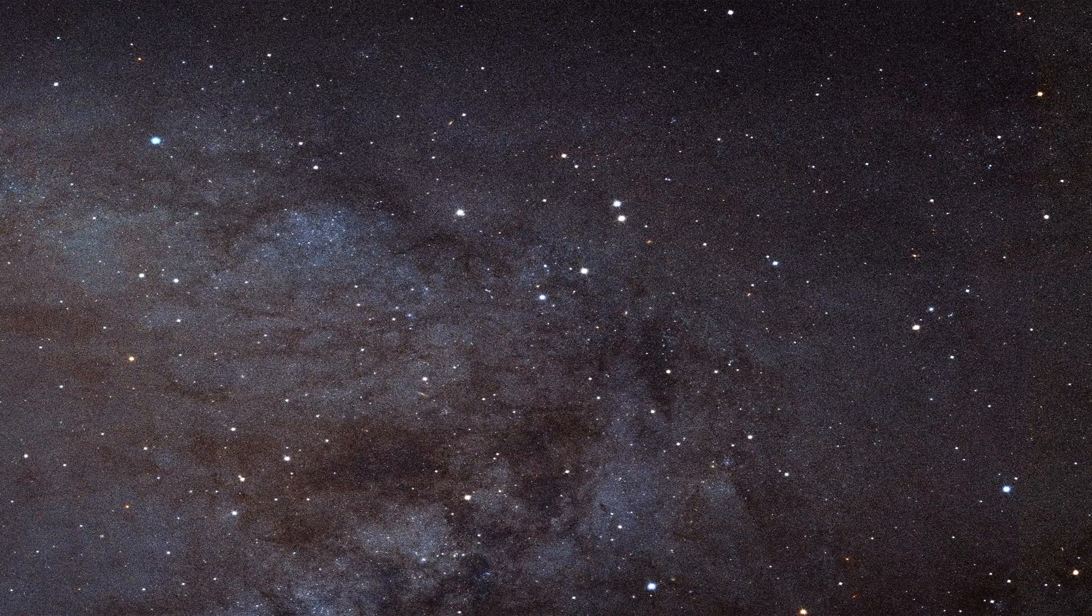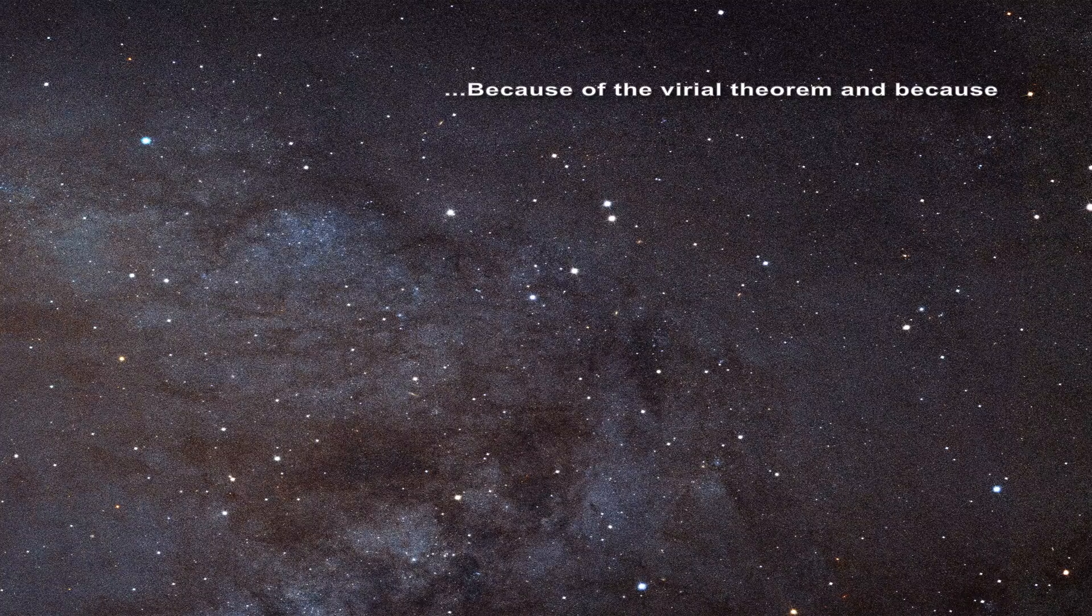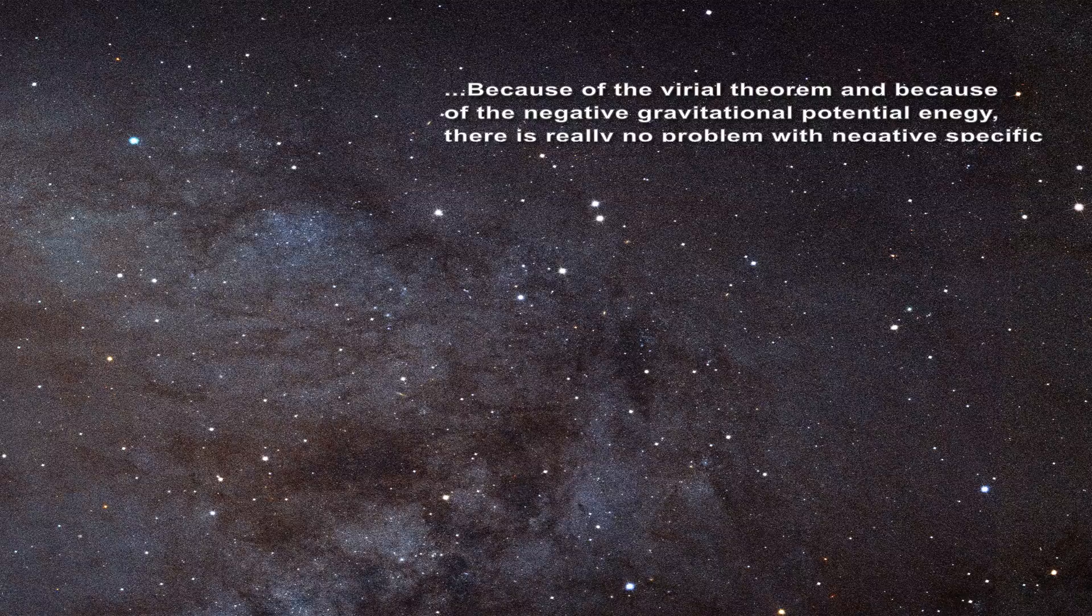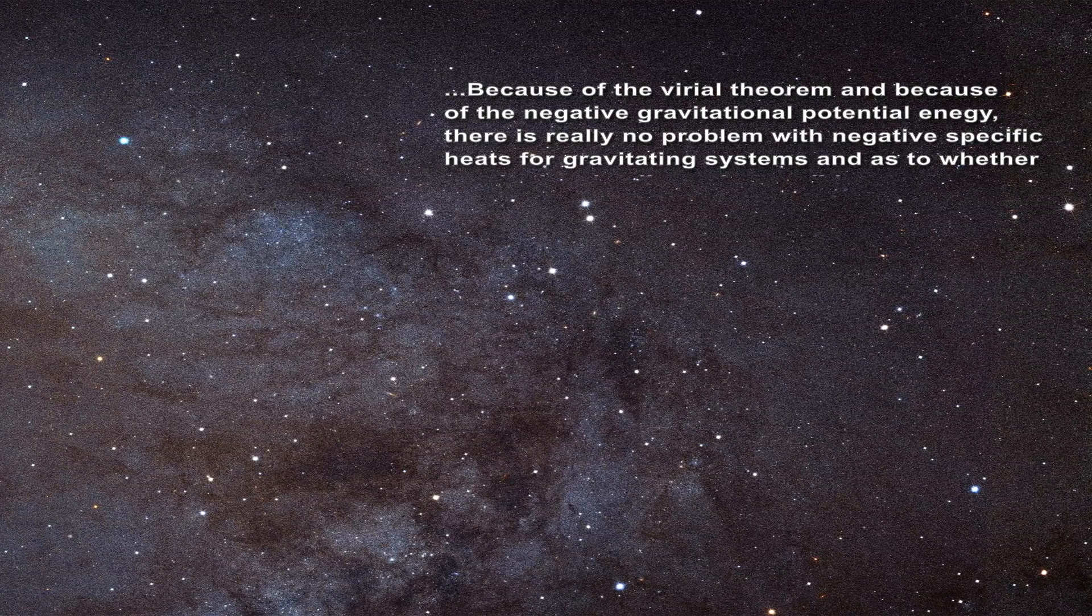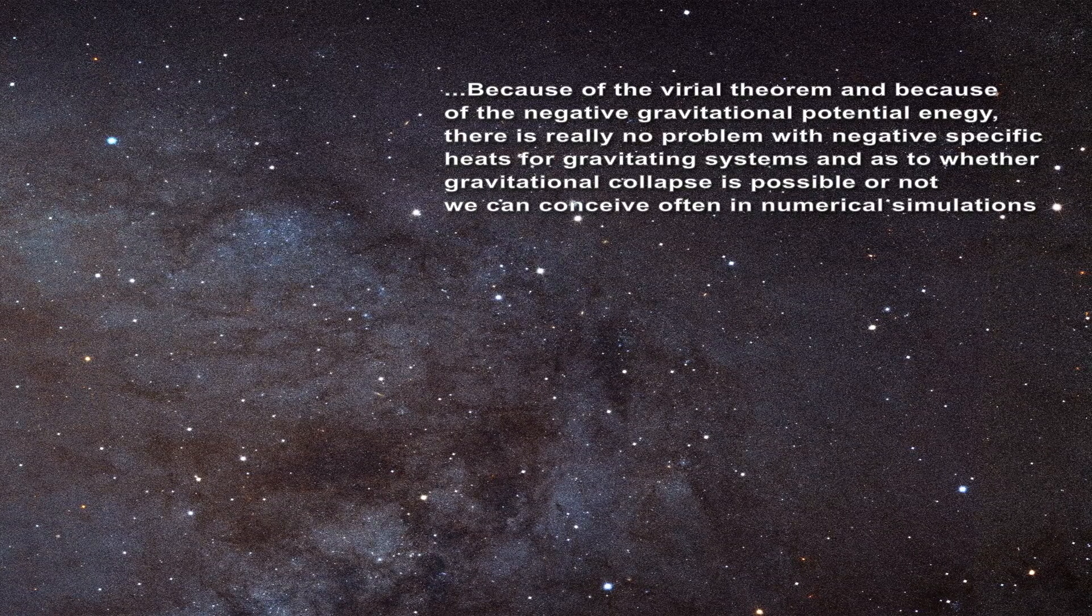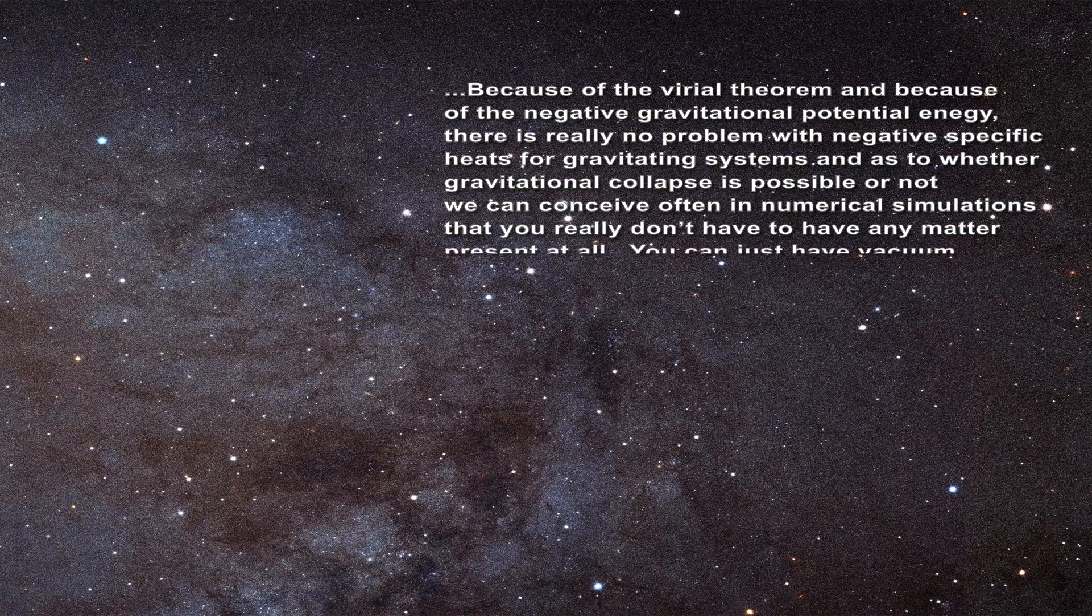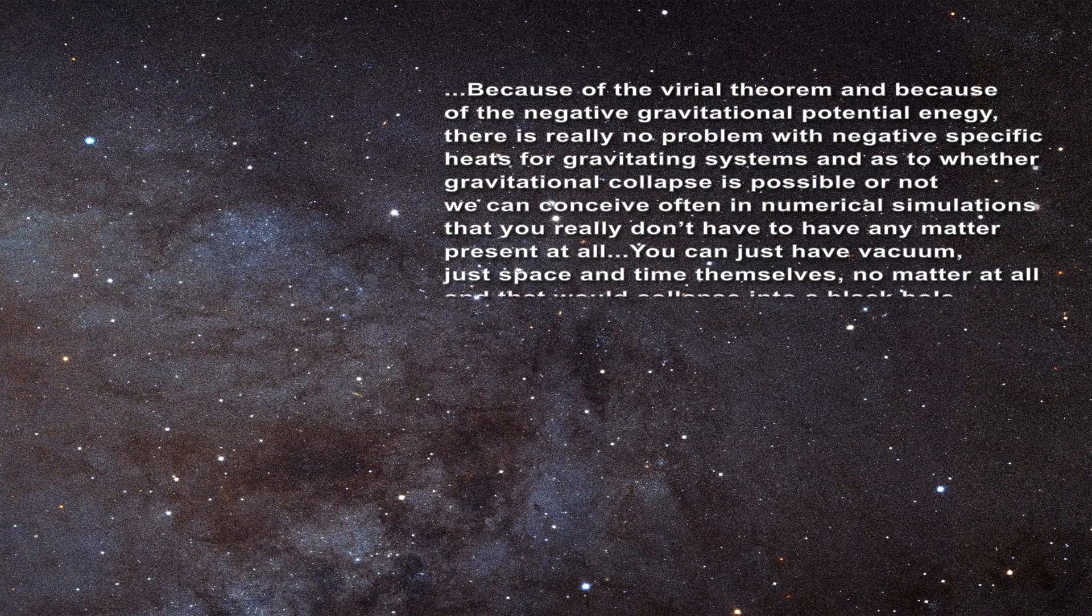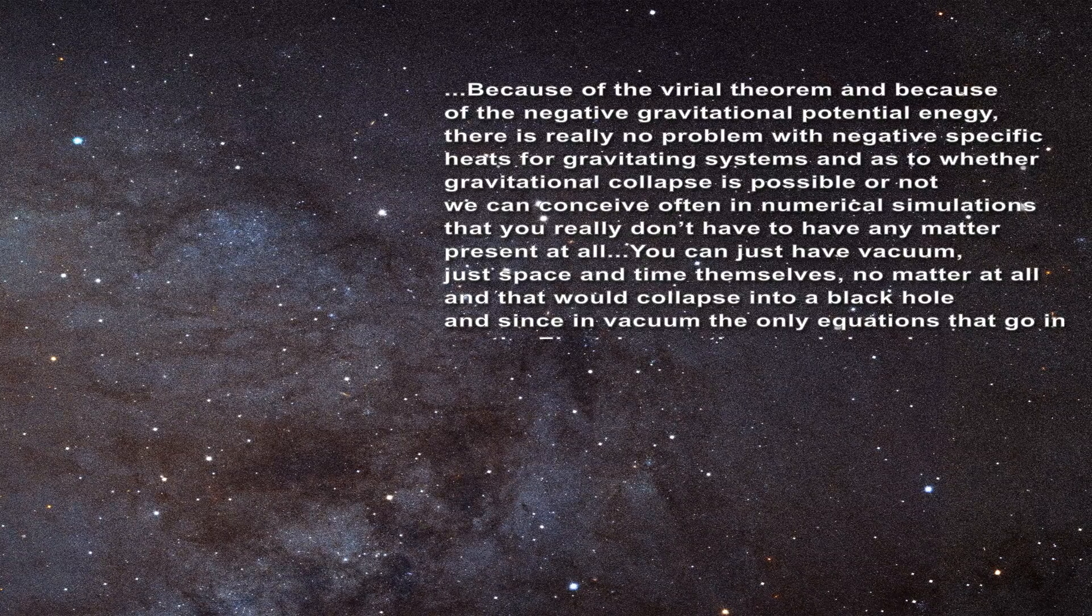The second question was really a comment, not a question. It went as follows. Because of the virial theorem and because of the negative gravitational potential energy, there is really no problem with negative specific heats for gravitating systems. And as to whether gravitational collapse is possible or not, we can conceive often in numerical simulations that you really don't have to have any matter present at all. You can just have vacuum, just space and time themselves, no matter at all, and that would collapse into a black hole.